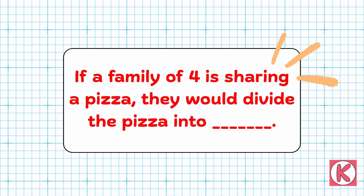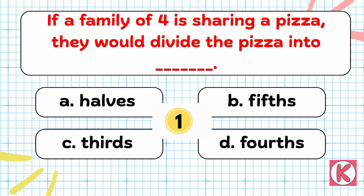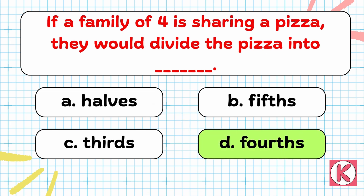Next question. If a family of 4 is sharing a pizza, they would divide the pizza into dash. Correct answer: Option D — 4s.